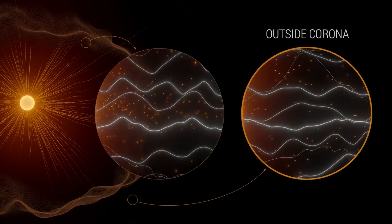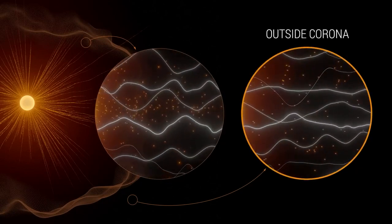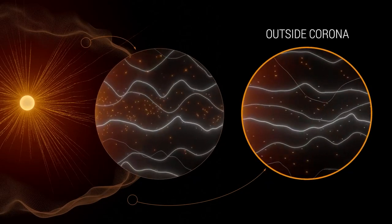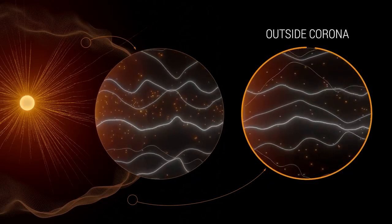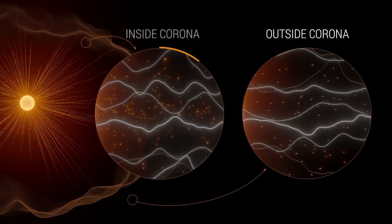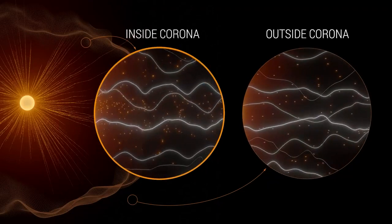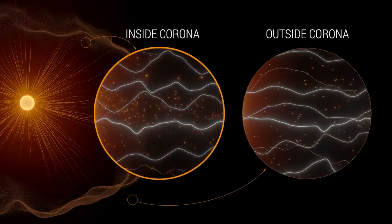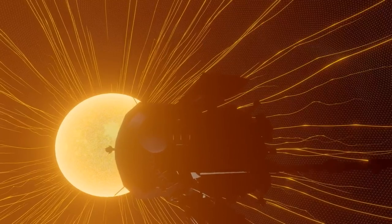Outside the corona, solar wind gushes out, pushing solar material away at high speeds, so that it can't return back to the sun's surface. Inside the corona, the sun's magnetic field becomes much stronger. Solar material is slower and tethered to the sun.